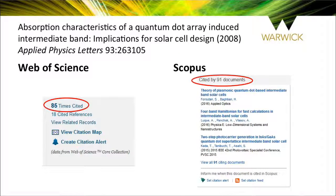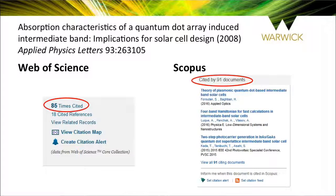A citation is a formal reference that makes clear the influence of another work on a researcher's new output. A citation should provide readers with all the crucial information for identifying and locating that influencing work. An article's citation score is calculated based on identified references from other articles to the article being analysed within the same database, so the same article included in two databases will often have two different citation scores, as can be seen here in the comparison between the Web of Science citation score and the Scopus citation score for the same article.